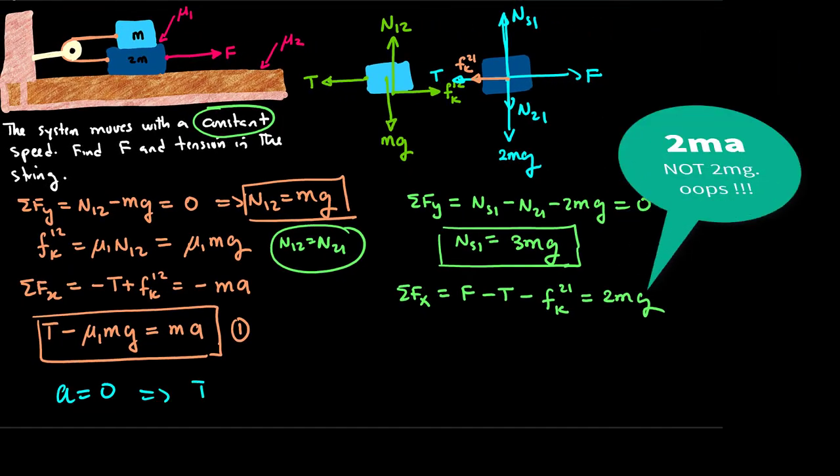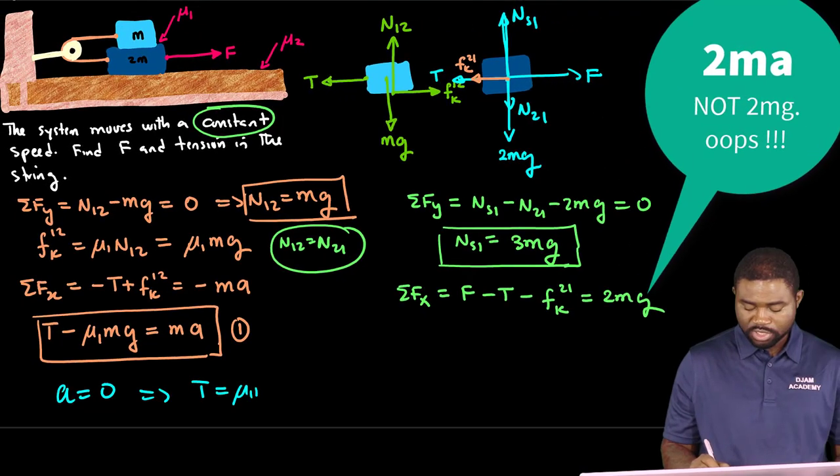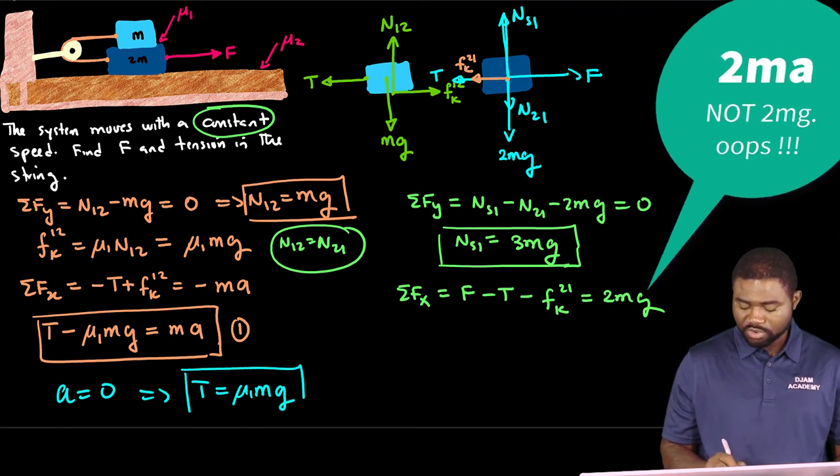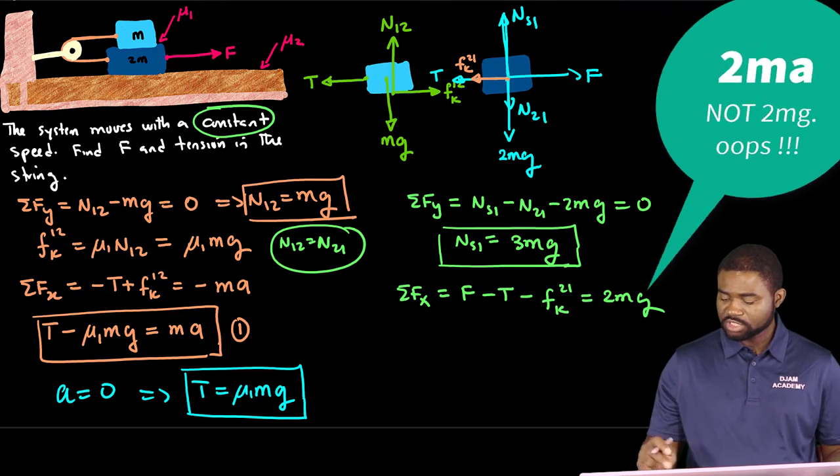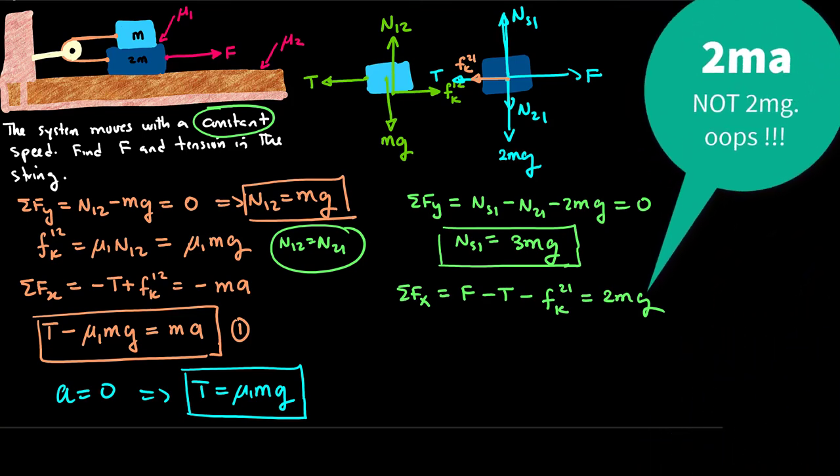Which means that T is equal to μ1 mg. So we know the value for T. We can then substitute the value for T in this expression and calculate the value for F.